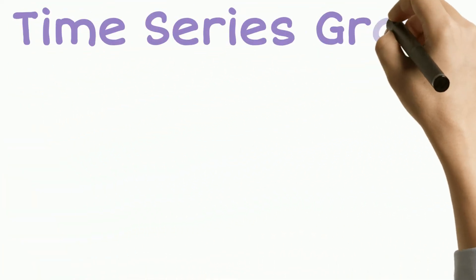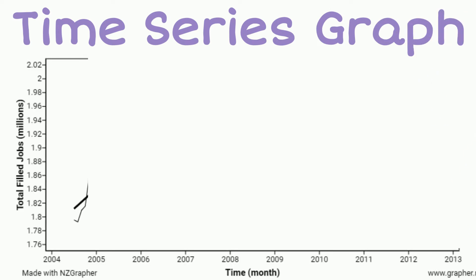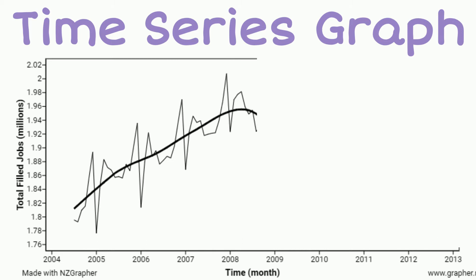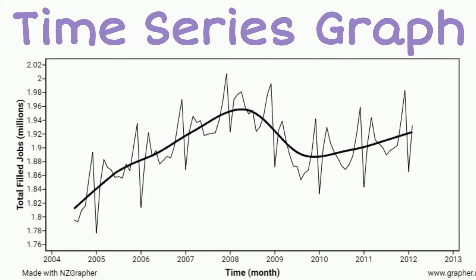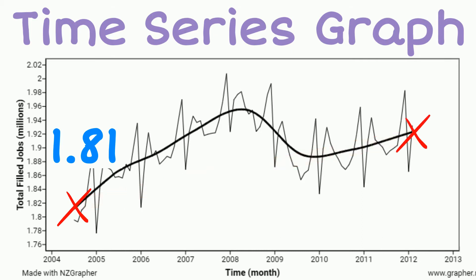So let's have a look at our graph. So the data starts in July 2004 and continues until February 2012. We've got our trend line as our solid black line through the middle. So that trend line starts in July 2004 with an average of 1.81 million people employed, and the number of people employed increases to around 1.92 million people by February 2012.